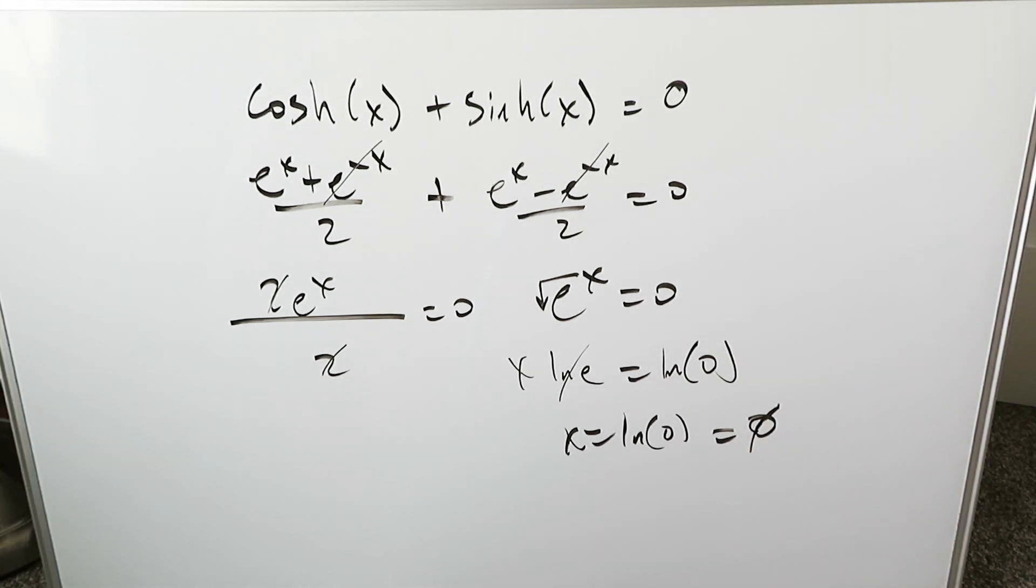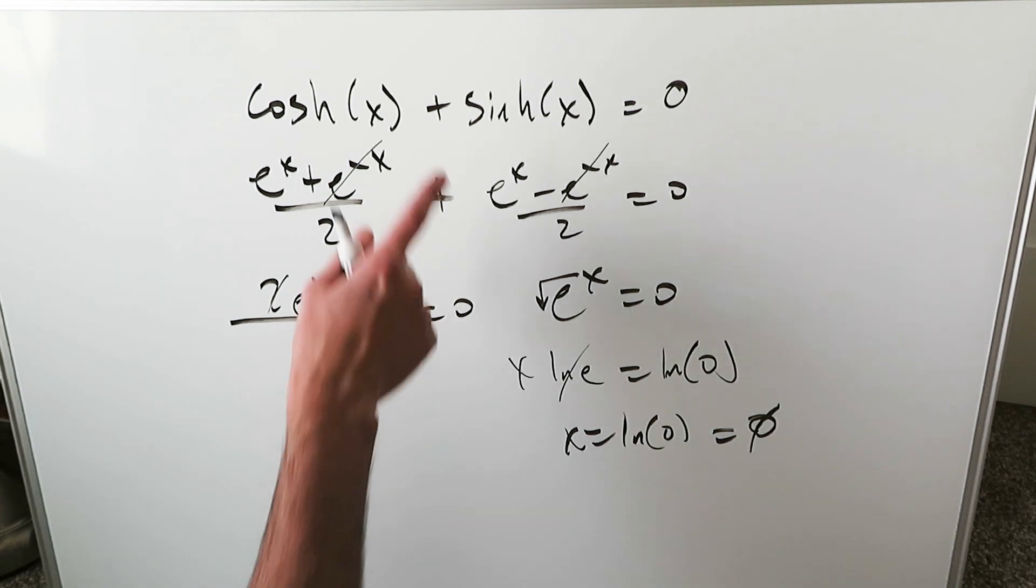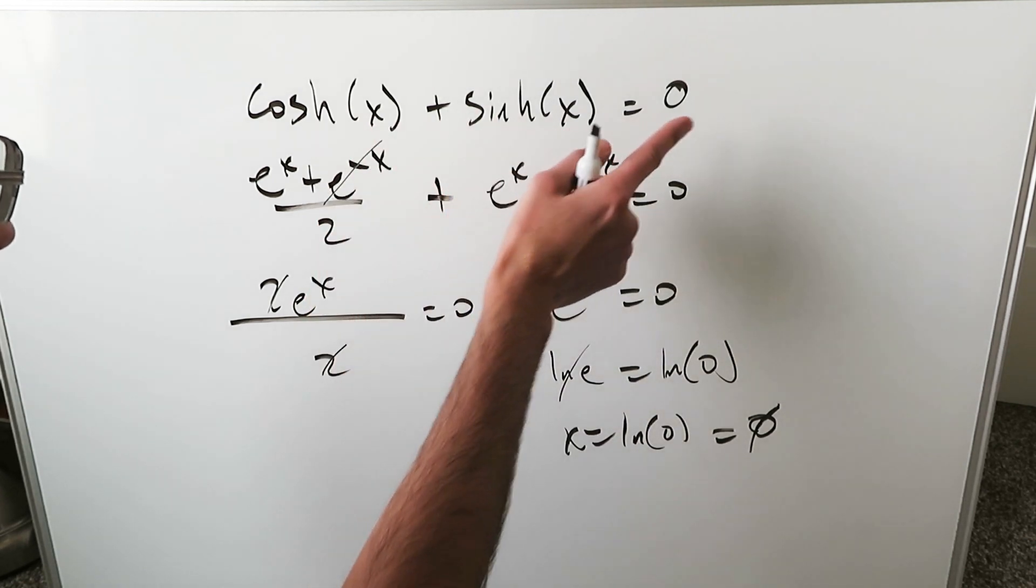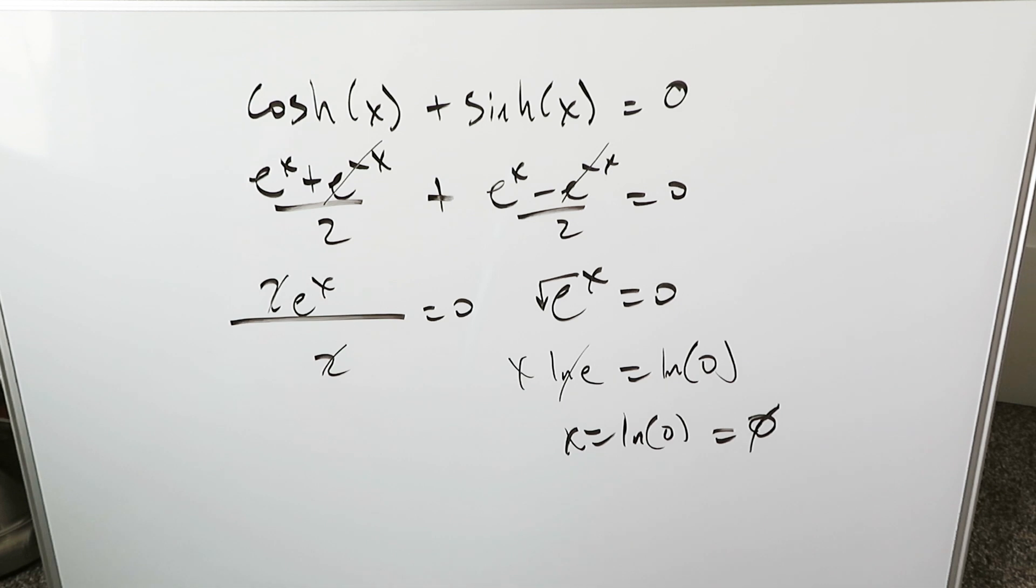So the student says rightfully so, for the algebra student, the precalculus student, there is no solution for this particular expression such that if you put a given value x here and a given value x here, the sum will equal 0. It won't happen.